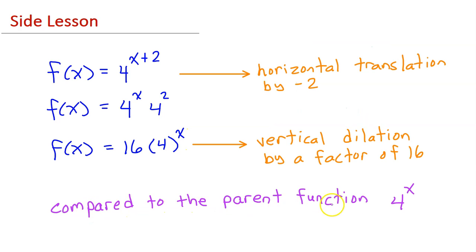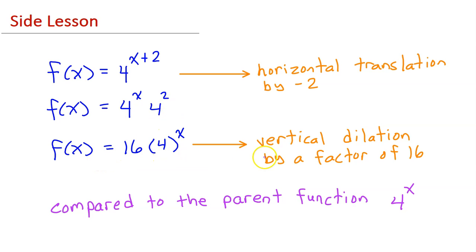Compared to the parent function 4 to the x power, f of x started off as a horizontal translation by negative 2. But now we have rewritten it as a vertical dilation by a factor of 16.